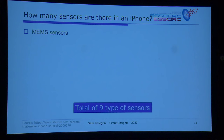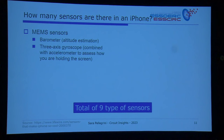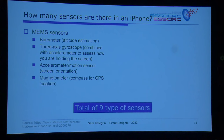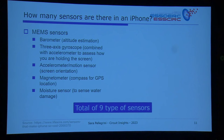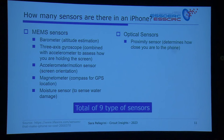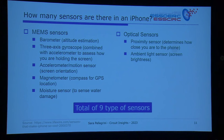There are two categories. First, MEMS sensors: a barometer to estimate altitude, a three-axis gyroscope to detect screen orientation, an accelerometer also for screen orientation, a magnetometer for the compass and GPS, and a moisture sensor — because apparently many people drop their phones in the toilet. We also have optical sensors: a proximity sensor that detects when you hold the phone near your head and turns the screen off, and an ambient light sensor used for screen brightness and camera white balance adjustment.